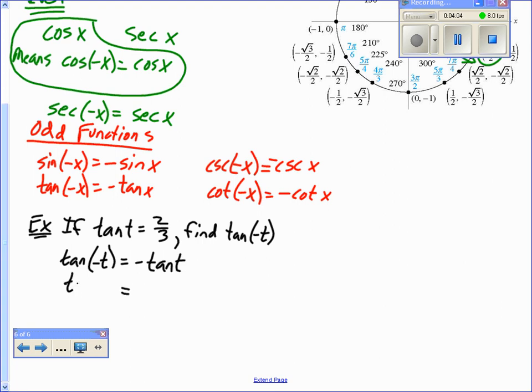So the tangent of negative t must be negative. What's the tangent of t? 2 thirds, so it's negative 2 thirds. So the tangent of negative t is negative 2 thirds. All right, so we use that odd function there, the fact that it's an odd function.